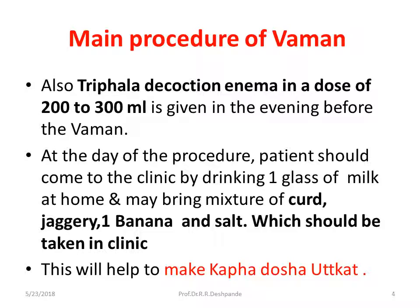On the day of the procedure, the patient should come to the clinic after drinking one glass of milk at home. The patient can bring a mixture of curd, jaggery, one banana, and salt, which is taken upon arriving at the clinic at around 7 a.m. This is the Kapha Prakopak period, when Kapha is most secreted in the body. The dinner the previous day and this morning mixture will make Kapha Dosha Utkrisht — increased in both quality and quantity — which we expect for the Vamana procedure.